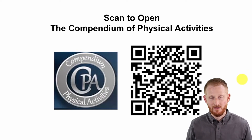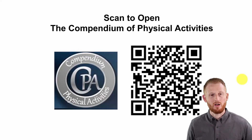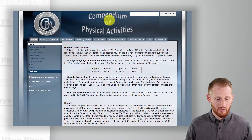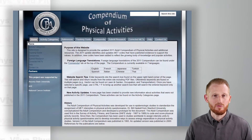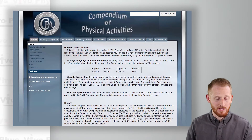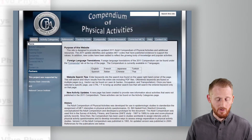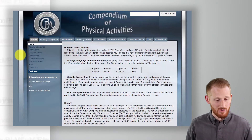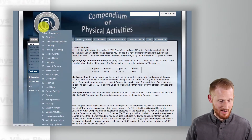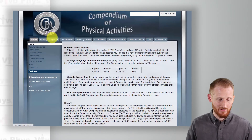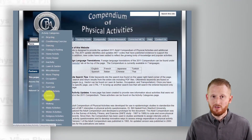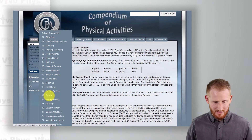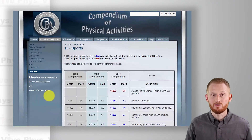These aren't perfect values — these are estimates based on research, but they are estimates. Here we are on the Compendium of Physical Activities website. There's a lot of good information here that you should go through and look around, and I will put a link to this website in the description below this video. I'm going to go to Activity Categories, and it brings up the different activity categories. We're going to go down to Sports.